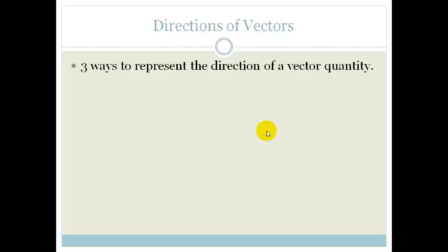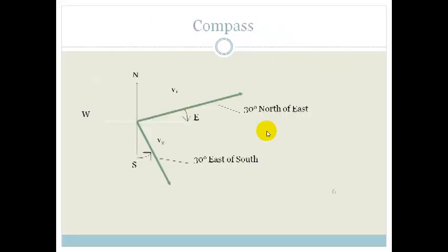So, there are three ways to represent the directions of the vector quantities. One, we can use a compass. Two, we can use bearings. And three, we can use the direction of a vector relative to another vector. So, let's look at that.